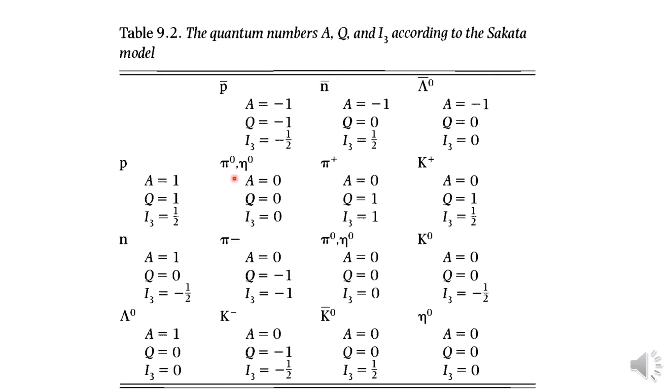Now, what are these quantum numbers, the baryon number A, the charge Q and the third component of isospin I for their product. That is for P, P bar produces this pi zero and eta zero we already discussed. So for an eta zero particle, just see what is the A value, this is equal to 0, that is this 1 plus minus 1 equal to 0. And what is the charge, again, is equal to 0, that is this 1 plus minus 1 is 0. And what is I3, again, is 0, that is this 1 by 2 plus minus 1 by 2 is 0.